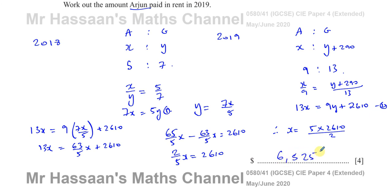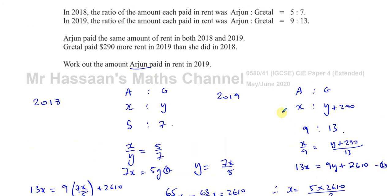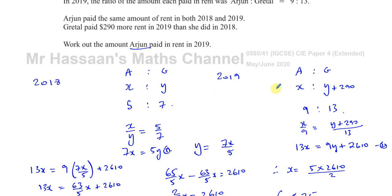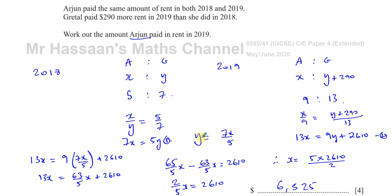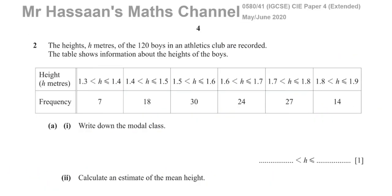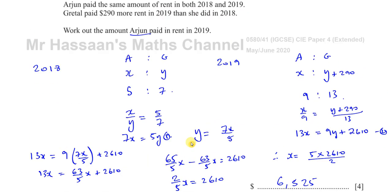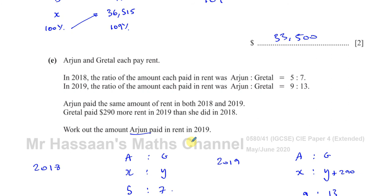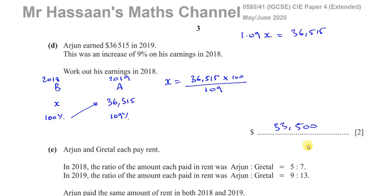$6,525 is the answer to the last part of question one. You set up ratio equations for the two different years and solve simultaneously to find what Arjun paid. That's a nice worded problem to finish question one. I will save this in the playlist for the paper, and also in the playlists for ratios and percentages. Thank you for watching and see you soon.